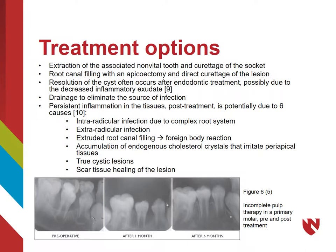Treating radicular cysts centers on the removal of the infection, and there are a few different treatment options. The non-vital tooth can be extracted and the socket can be curetaged. Root canal treatment can also be performed with an apicoectomy, also requiring curetage of the lesion. Resolution of the cyst can often occur after endodontic treatment, possibly due to the decreased inflammatory exudate present. Incision and drainage can also be performed to eliminate the source of infection.